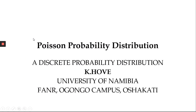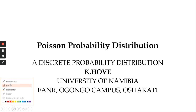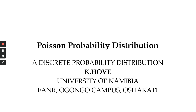Welcome to Poisson Probability Distribution. From the previous distribution we looked at binomial distribution and the conditions suitable for its use. Today we are looking at another distribution referred to as the Poisson Probability Distribution. A Poisson Probability Distribution is a discrete probability distribution. Discrete random variables are those which can only assume exact values called integers, unlike continuous counterparts which can take any value in a given interval.